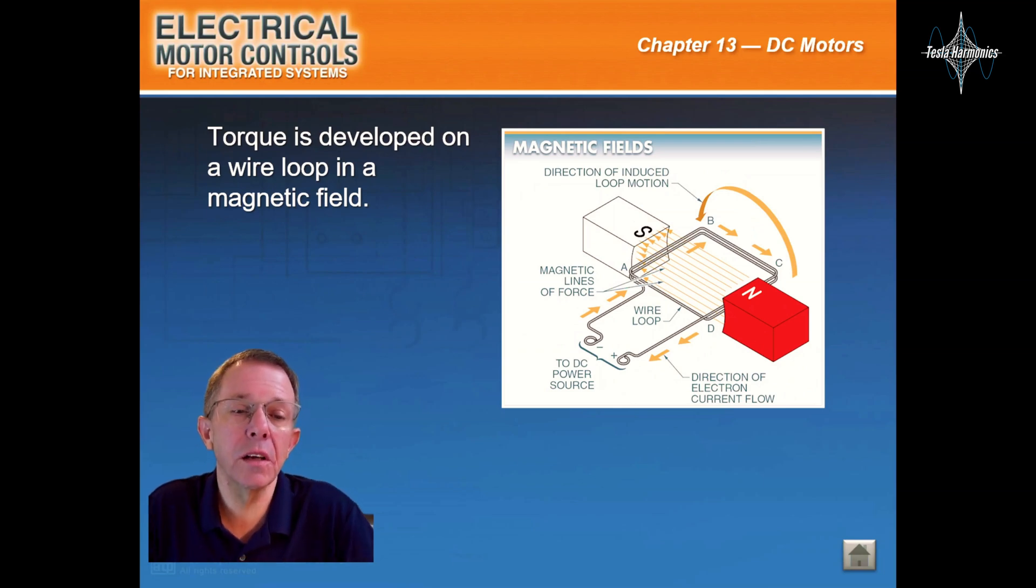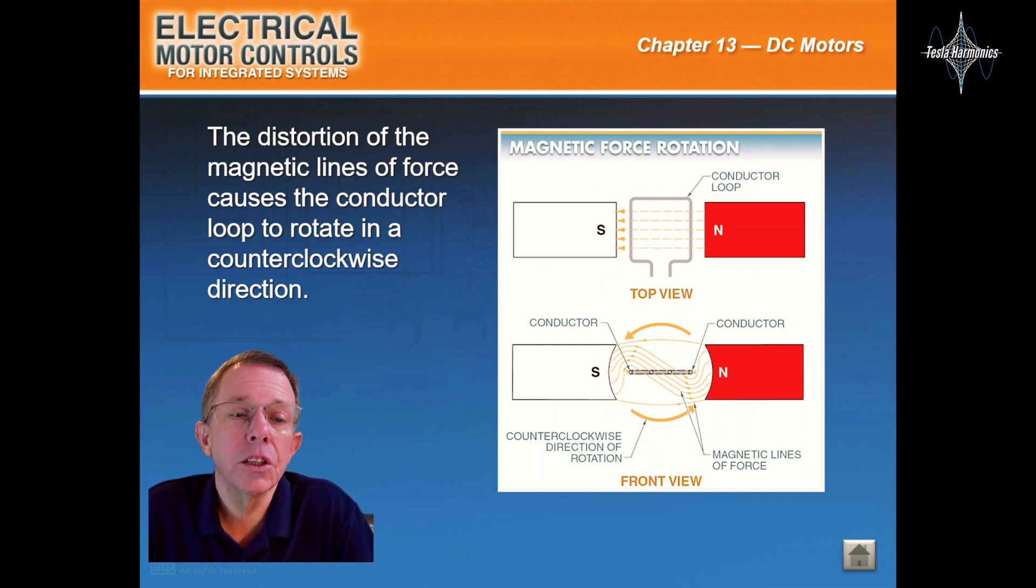Torque is developed on a wire loop in a magnetic field. The distortion of the magnetic lines of force causes the conductor loop to rotate in a counterclockwise direction.